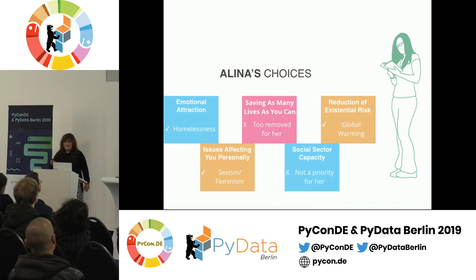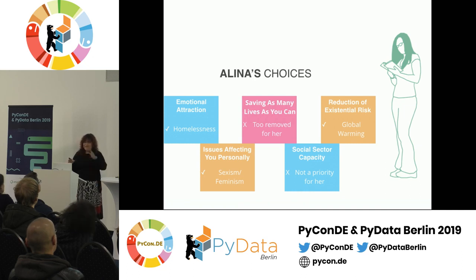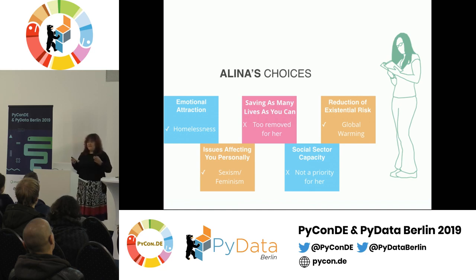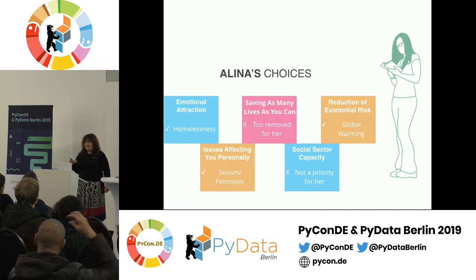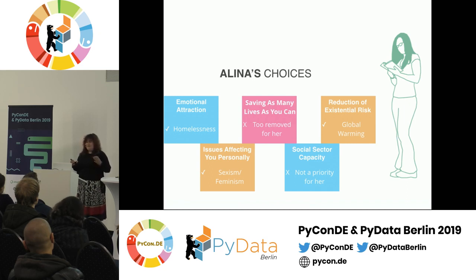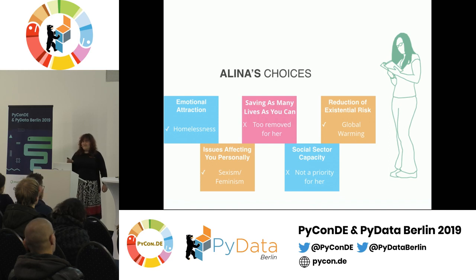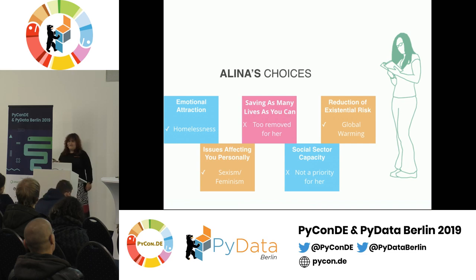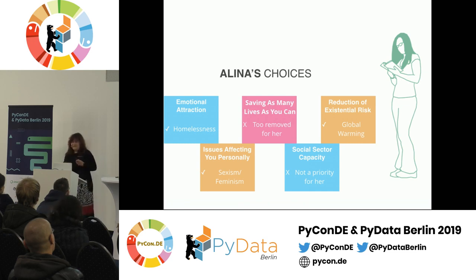Back to Alina. Alina thought really hard about this question and decided that homelessness is something she finds really emotionally important, because every day when she goes to work in the subway, she sees people begging for money and it really depresses her. On the other hand, she's less concerned about saving as many lives as she can, because it's too abstract and removed for her. She does worry about existential risks — she's really freaked out about global warming and wants to do something about it. She's in a fairly privileged position: she's healthy, she's white, she's living in a safe country. But she does occasionally experience sexism, and she thinks feminism is an important cause.